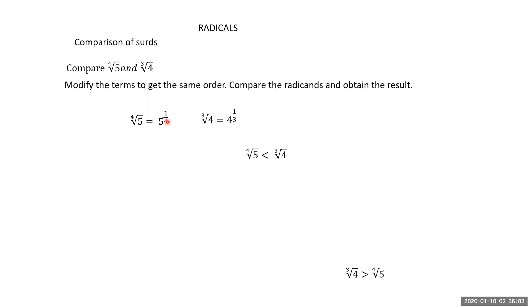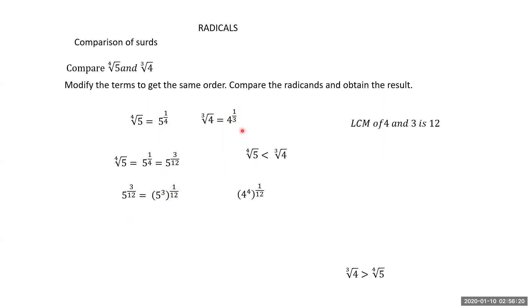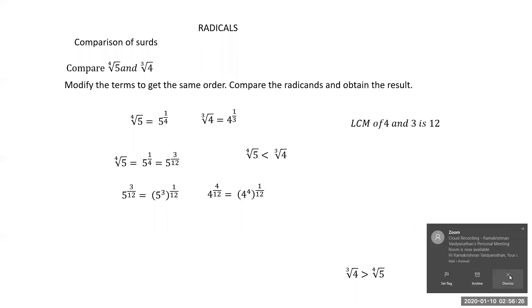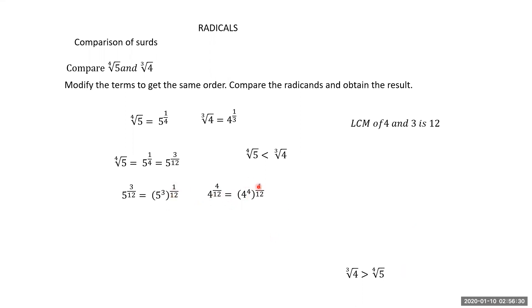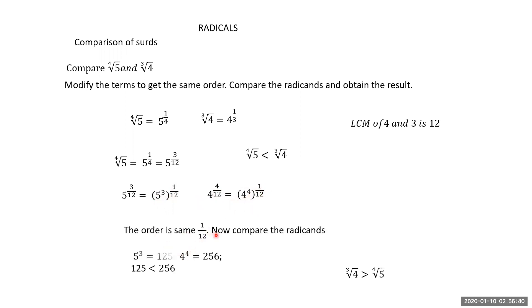Multiply: 5 to the power 1/4 becomes 5 to the power 3/12 (multiply numerator and denominator by 3), and 4 to the power 1/3 becomes 4 to the power 4/12 (multiply by 4). So we get: 5³ to the power 1/12, and 4⁴ to the power 1/12. Now 1/12 is common (same order), so compare the radicands: 5³ = 125 and 4⁴ = 256. Since 256 > 125, we conclude 4 to the power 4/12 > 5 to the power 3/12.